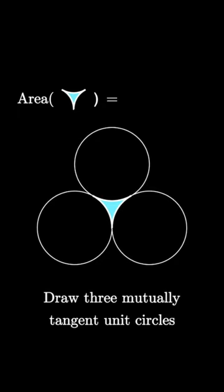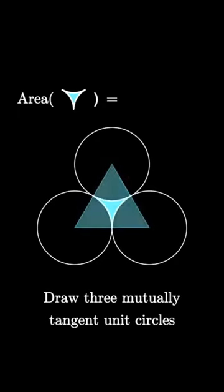One way to answer this problem is to realize that the centers of the three circles can be connected to form an equilateral triangle with a side length of 2.